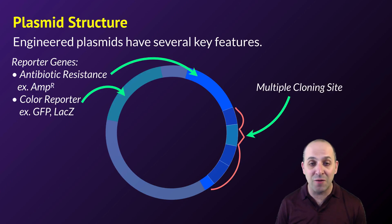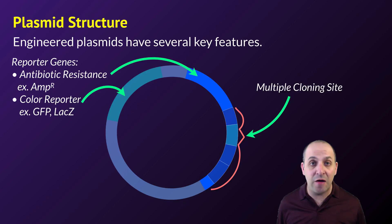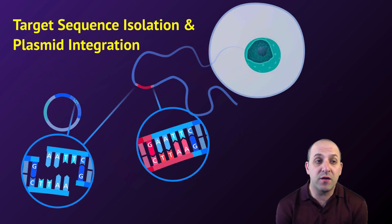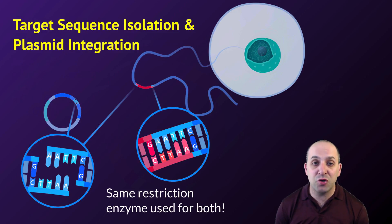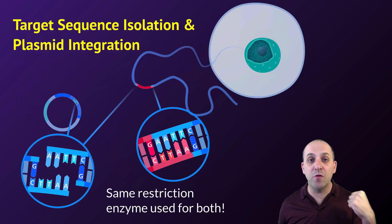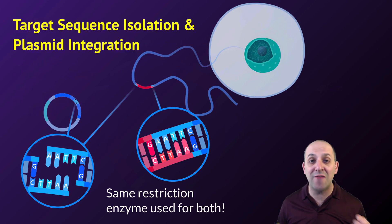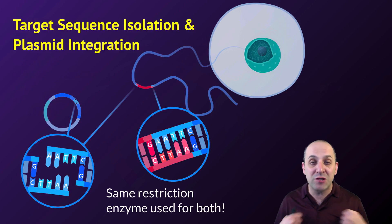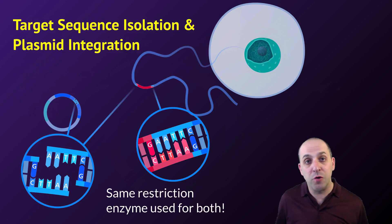The multiple cloning site is used to cut open the plasmid for the purpose of introducing the DNA molecule of interest, and then ligating them together to make our recombinant plasmid. The first thing we need to do is isolate our target sequence and integrate it into the plasmid using restriction enzymes. The trick is to use the same restriction enzymes for both the isolation of the DNA molecule and its integration into the plasmid. By using the same restriction enzyme for both purposes, we'll have complementary sticky ends, so when we want to recombine them, the overhanging bases will naturally line up due to base pairing rules.